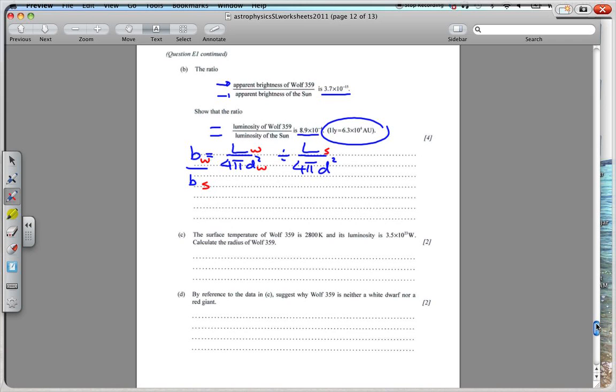Now we know that this value over here is given to us at 3.7 times 10 to the negative 15. So we have 3.7 times 10 to the negative 15 is equal to, when I divide this, I'm going to have LW over, the 4 pi's will cancel out, but I'll have DW the distance to Wolf squared times DS squared over LS squared of the sun.